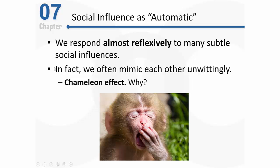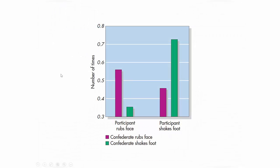Let me walk you through a research study that demonstrates this. People were randomly assigned to one of two situations. In one situation, they were put in a room with a confederate who started rubbing their face a lot — not something very obvious, but they were touching and rubbing their face. In another condition, people were with a confederate who was shaking his foot a lot. When the confederate rubbed their face, participants tended to rub their own face more than shake their foot. When the confederate shook their foot, participants tended to shake their own foot more than rub their face.